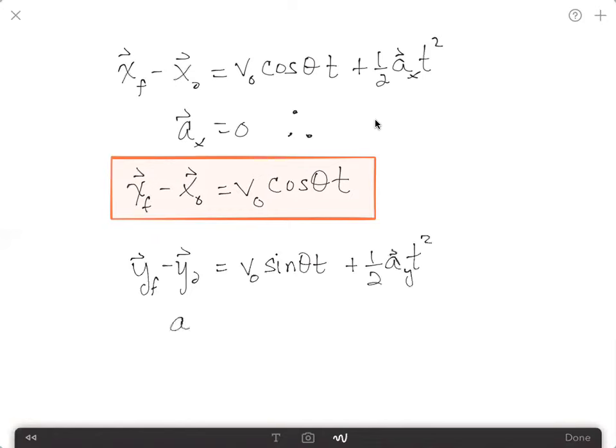So a_y is again just going to be equal to negative g. We can therefore write that y_f minus y_initial is just equal to the initial velocity in the y direction times t minus one half g t squared. So the theory behind this thing is...